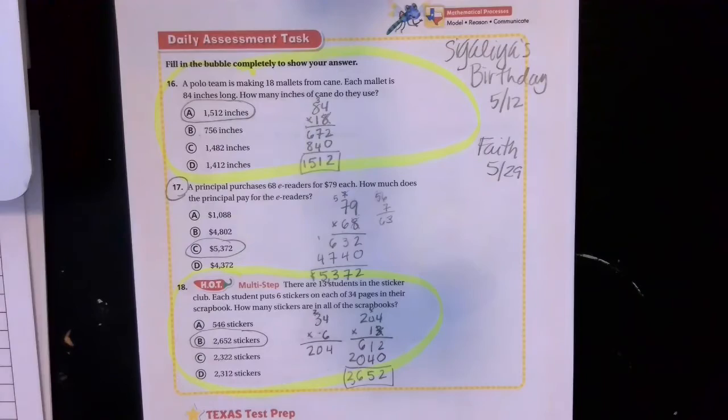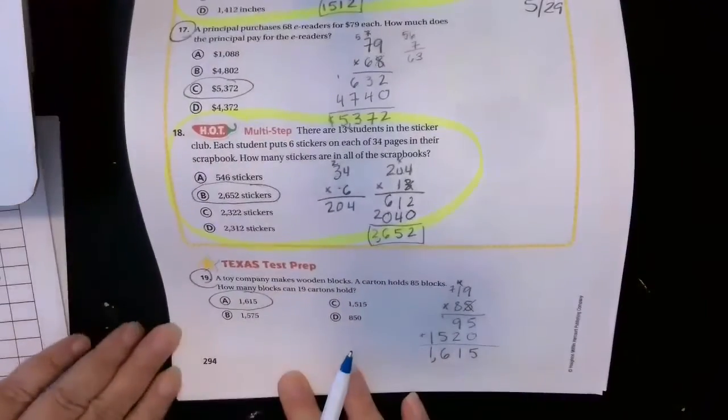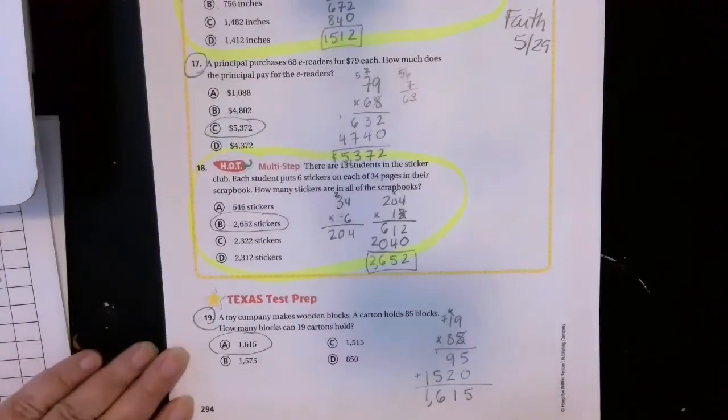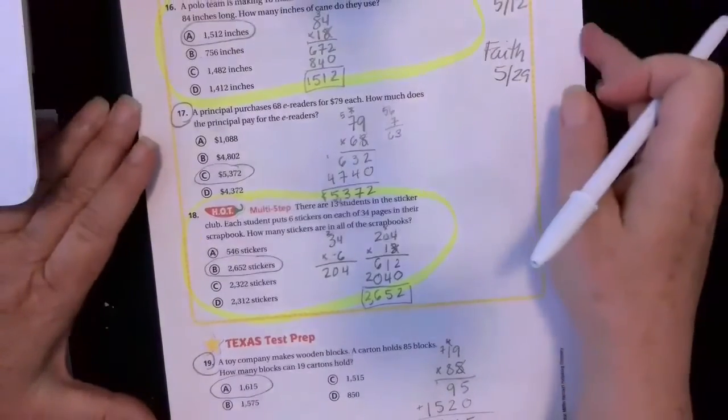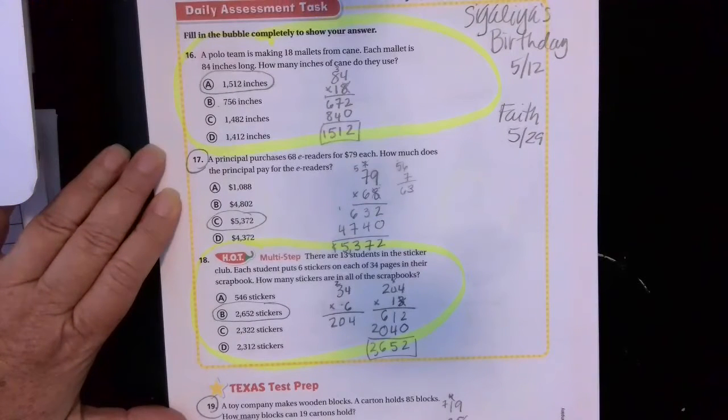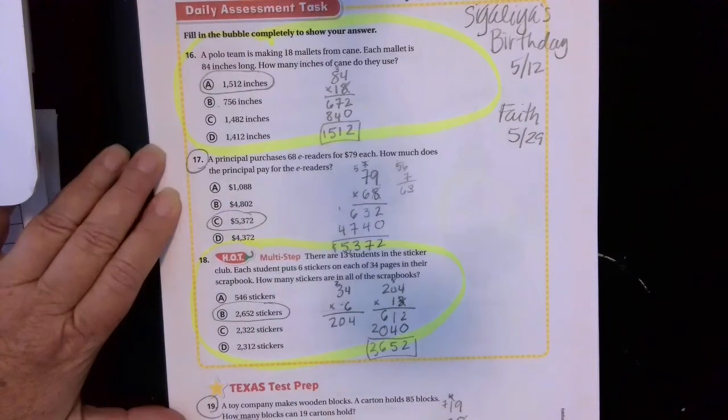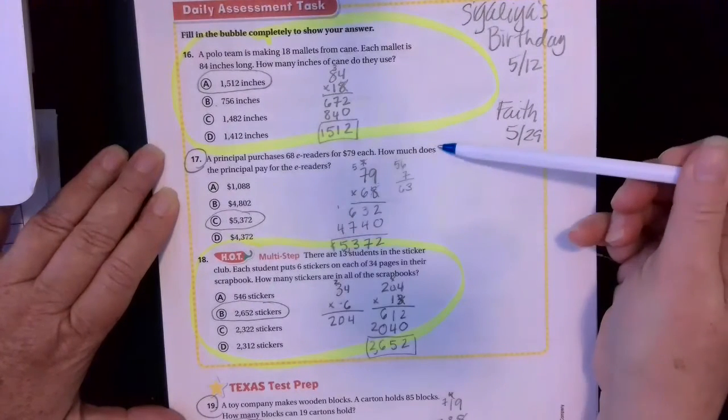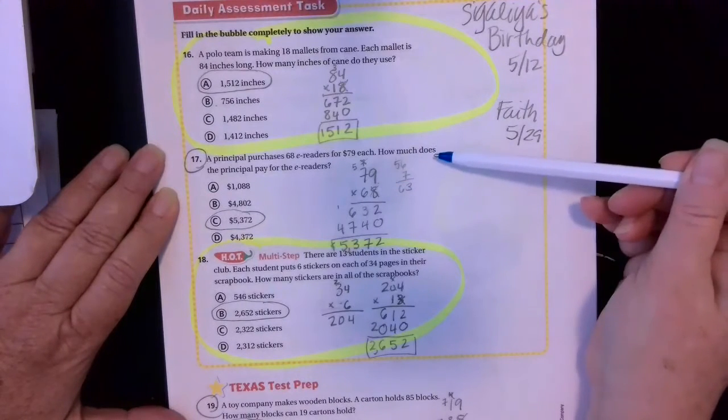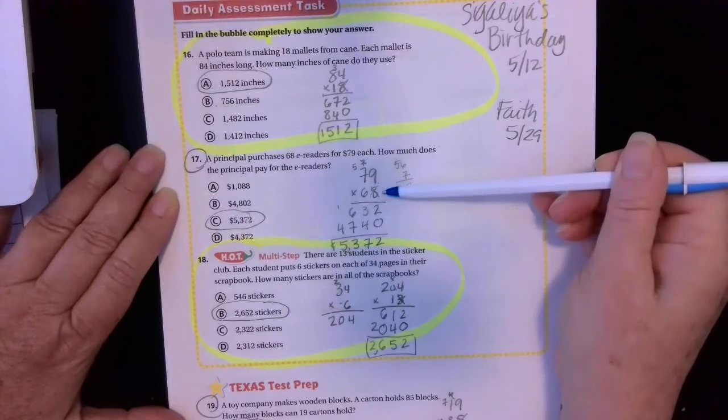Yesterday in class, I had the link for all the pages for this unit, but I only printed out pages four through six of that packet, which was 294, 95, and 96. We are multiplying two digit by two digit on all of the problems for the next couple of days. So in class on Monday, we started here with the principal purchases 68 e-readers for $79 each. How much does the principal pay for the e-readers? Each one costs $79, and they bought 68 of them. And then we just multiplied that out.